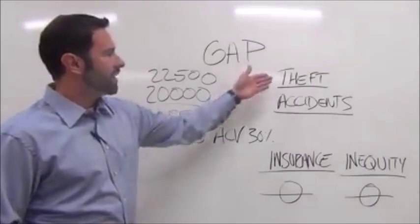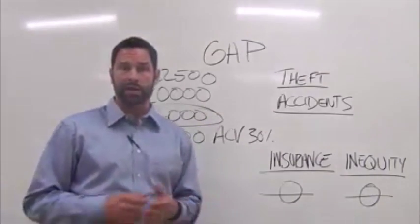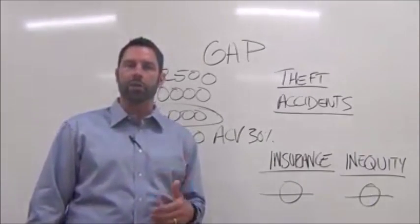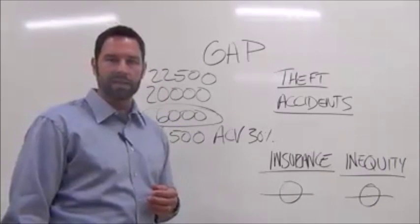So God forbid if your vehicle was either stolen or in an accident declared a complete loss, you have two out-of-pocket expenses. The first one is from your insurance company. You either have a $500 or $1,000 deductible. That's the first thing gap insurance comes in and takes care of.